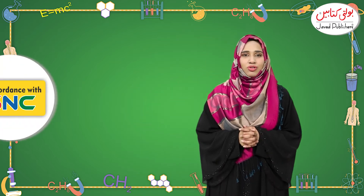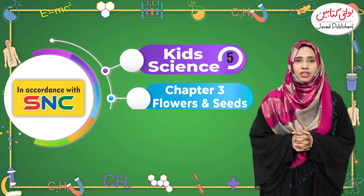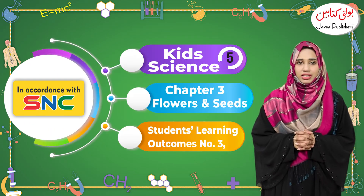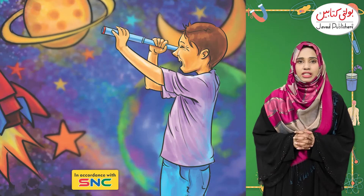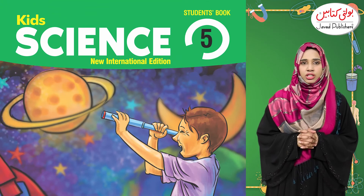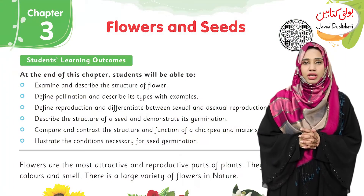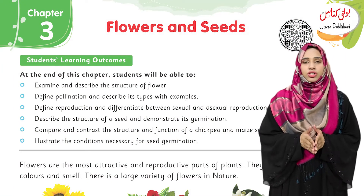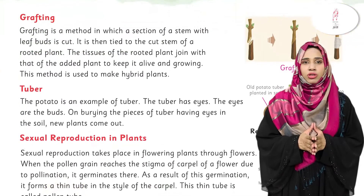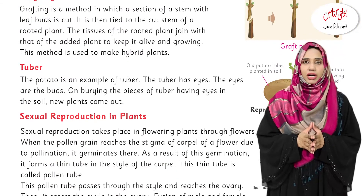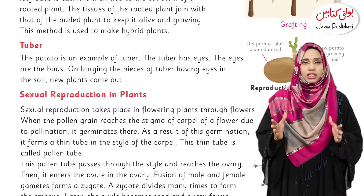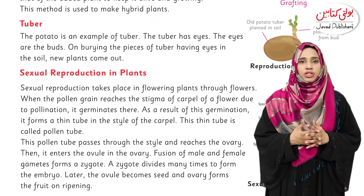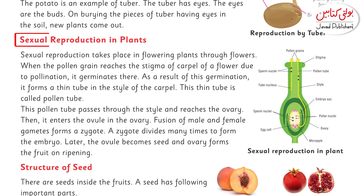Assalamu alaikum and welcome to Javed Publisher. We are discussing kids science grade five, chapter number three. The topic is flowers and seeds. In this video we are going to discuss sexual reproduction in plants. Sexual reproduction in plants, page number 23.